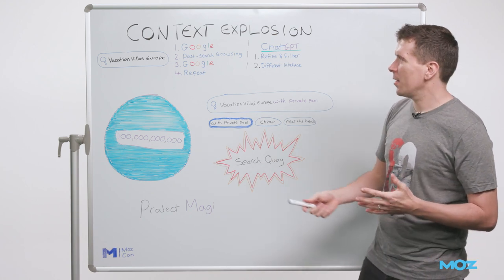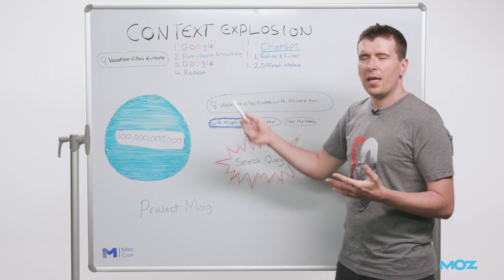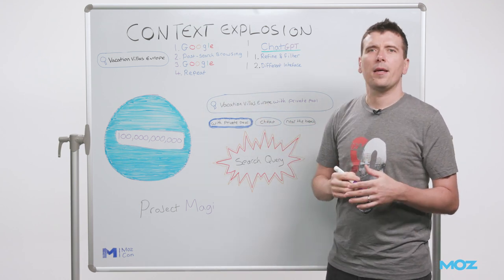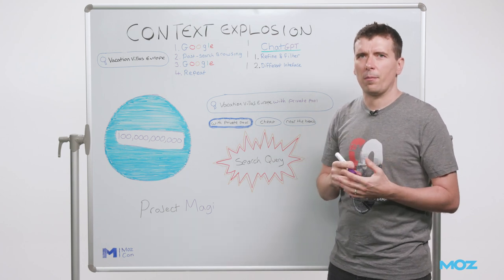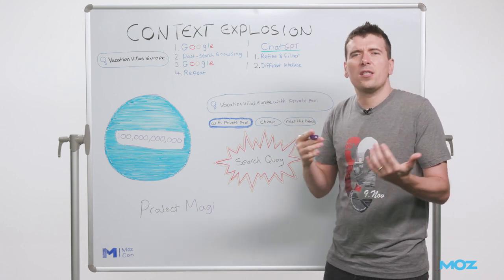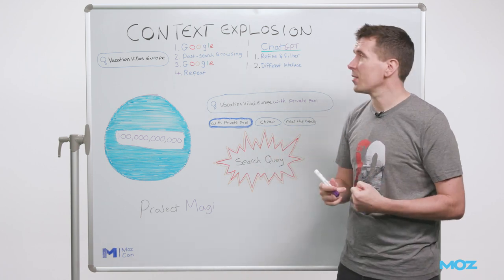So what normally happens is we type in our two to five keywords into Google. And then if it's a complex search query like vacation planning, then we'll go and we'll open lots of those links manually looking through them and seeing does this fulfill our criteria, basically applying the rest of that explicit context manually ourselves.